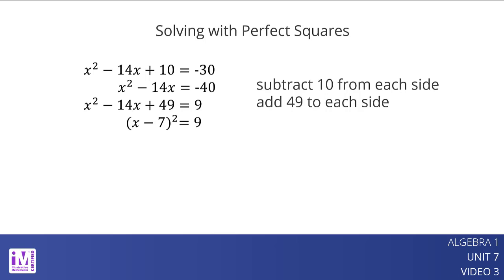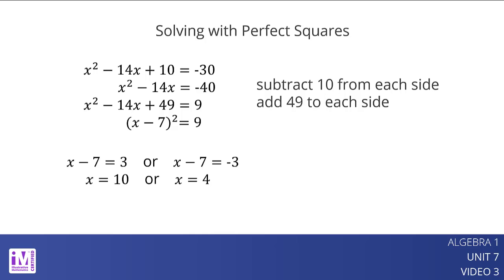The left side is now a perfect square because x squared minus 14x plus 49 is equivalent to the quantity x minus 7 squared. If a number squared is 9, the number has to be 3 or negative 3. So, x equals 10 and x equals 4 are solutions to the equation. This method of solving quadratic equations is called completing the square.